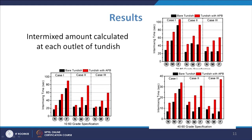For a 20-80 specification the intermixed amount is higher, going up to close to 30 tons and close to 50 tons in the case with APB. This is the result observed when using Advanced Pouring Box type flow modifiers — it basically increases the intermixed amount. Using these flow modifiers causes both grades to mix first rather than the old steel being flushed out first, thereby increasing the intermixed amount.